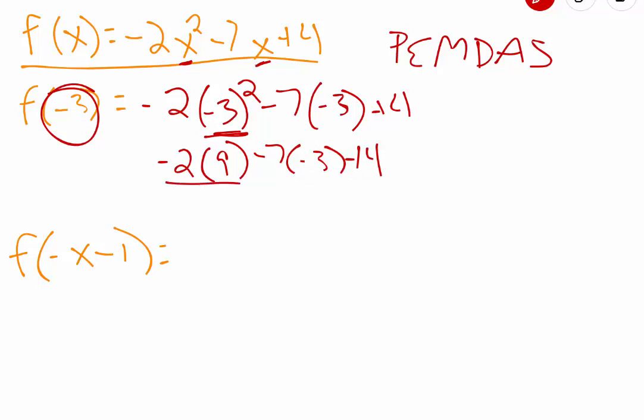Multiply before you add or subtract. Negative 2 times 9 is a negative 18. Negative 7 times negative 3 is a positive 21, plus that 4 that we have there at the end. So if we do negative 18 plus 21, that is giving us a positive 3. And 3 plus 4 is 7. So f of negative 3 is equal to 7.